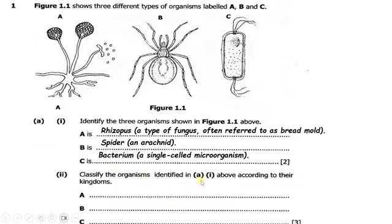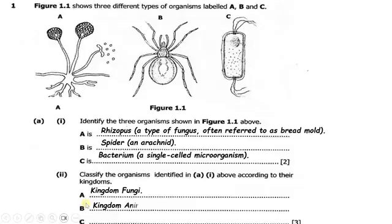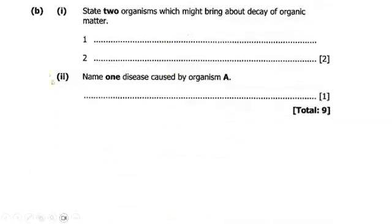Now we classify these organisms according to their kingdoms. The Rhizopus belongs to the kingdom Fungi. The spider belongs to the kingdom Animalia. The bacterium belongs to the kingdom Bacteria.